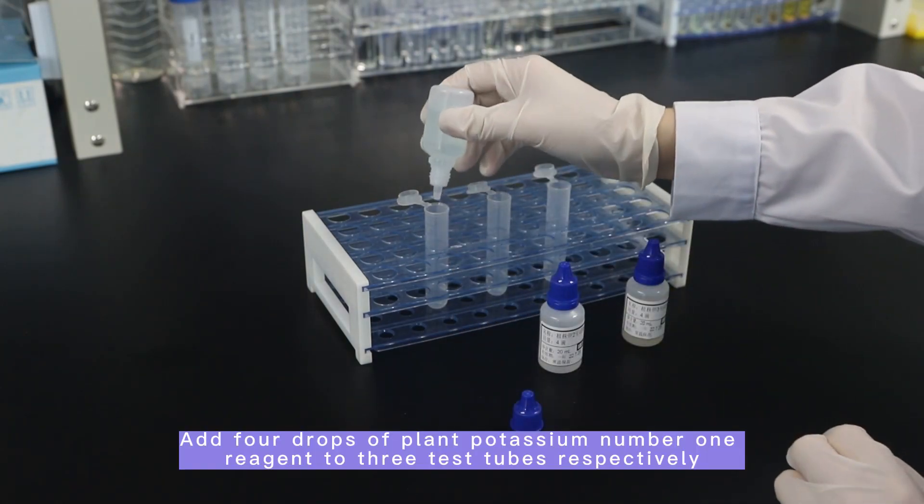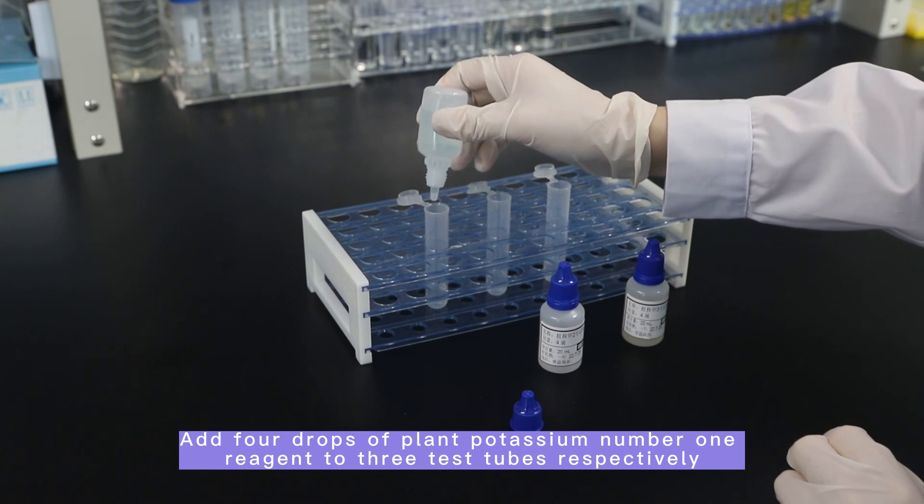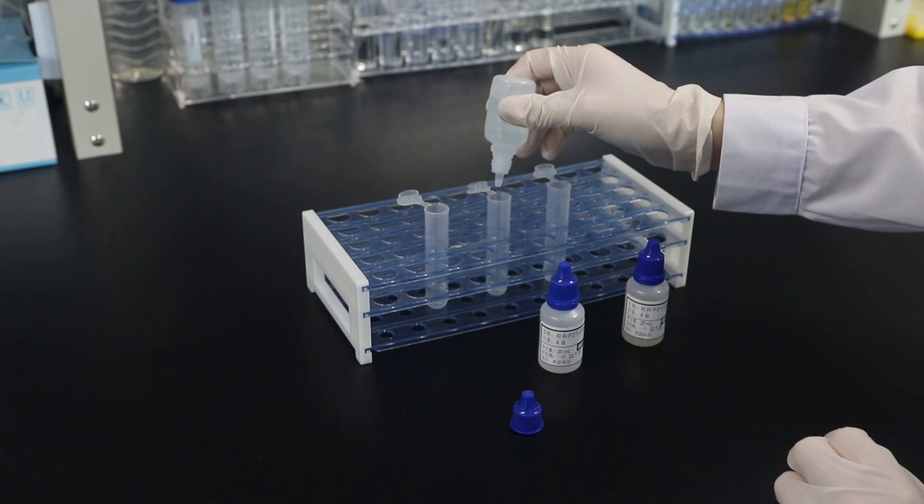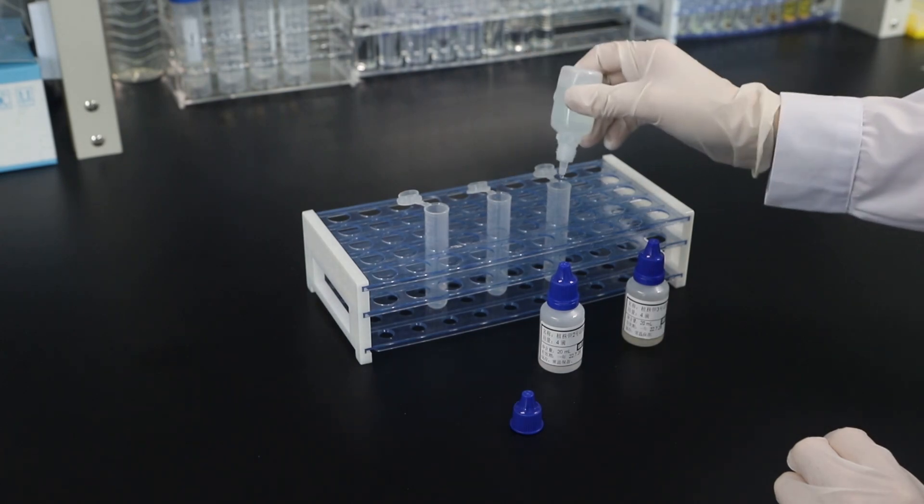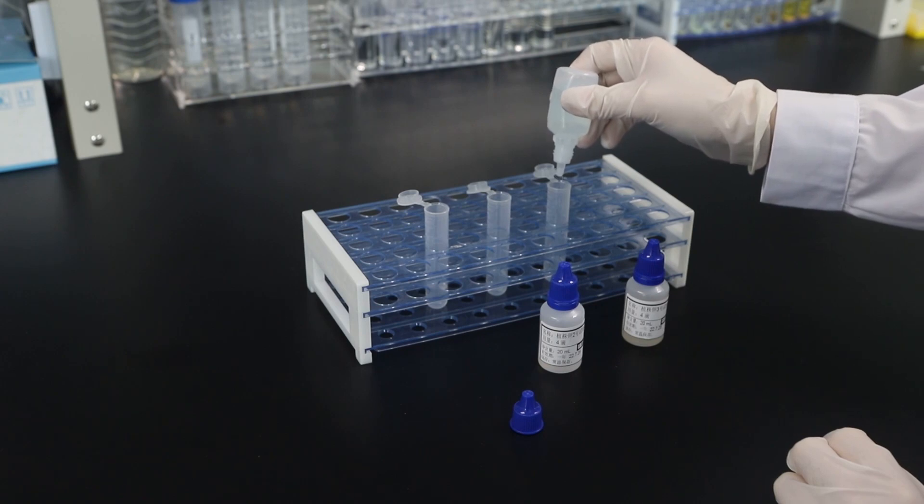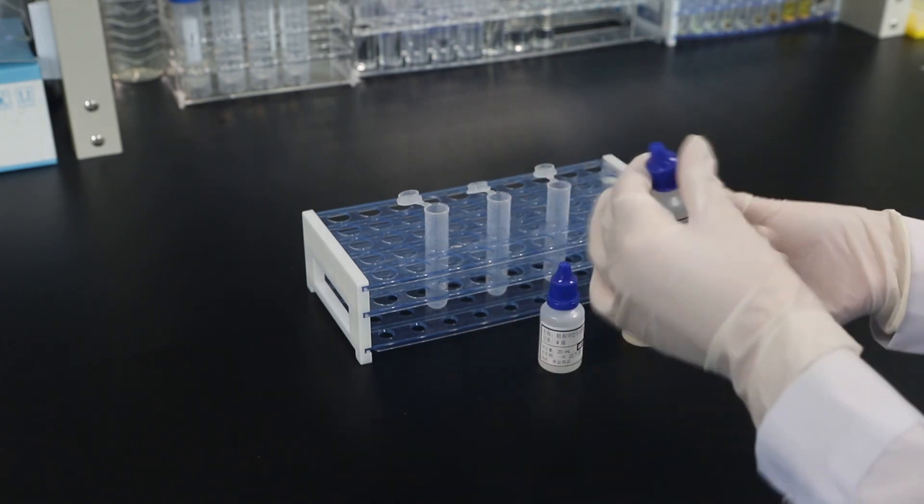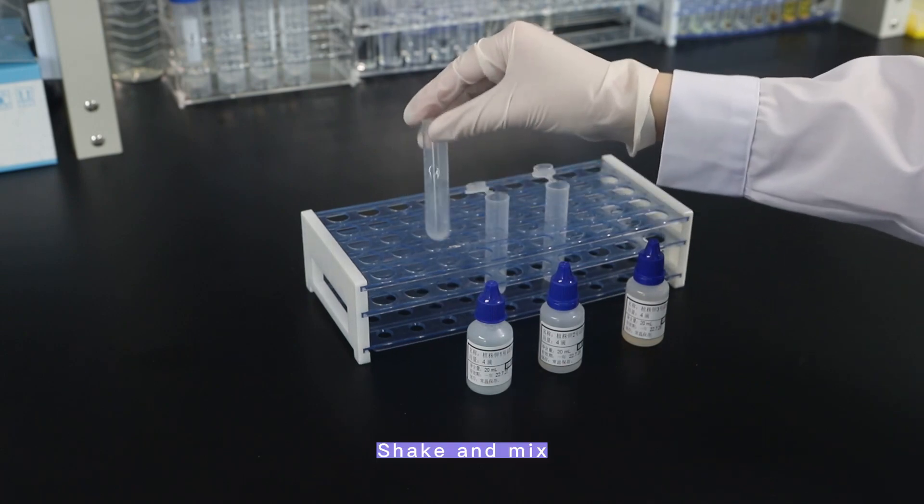Add four drops of plant potassium number one reagent to three test tubes respectively. Shake and mix.